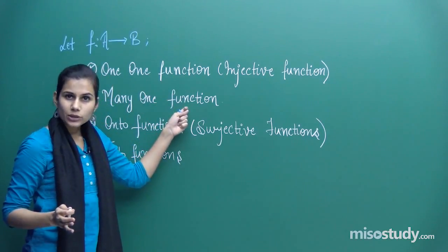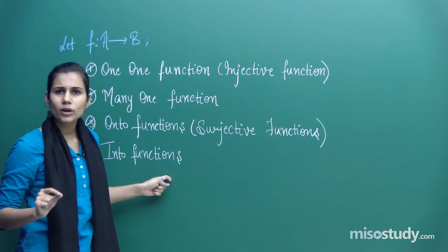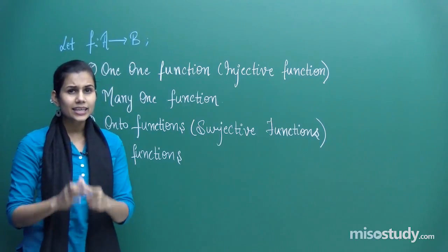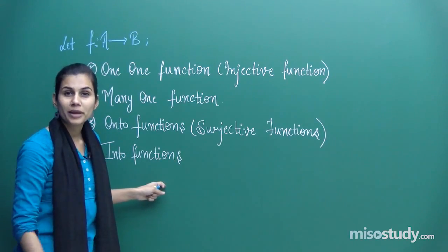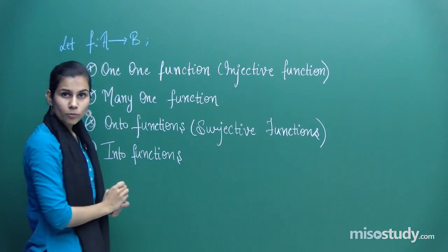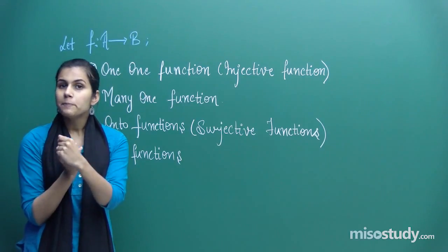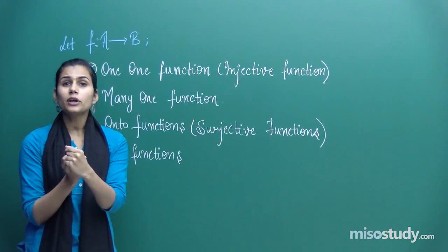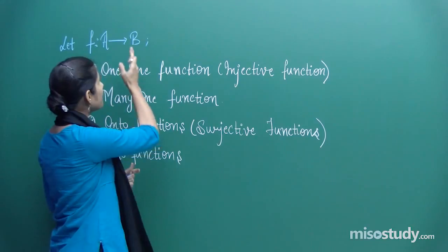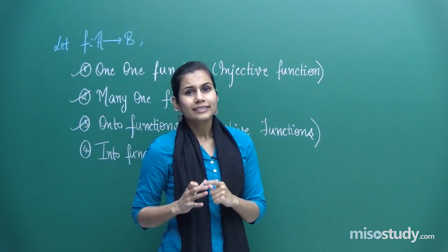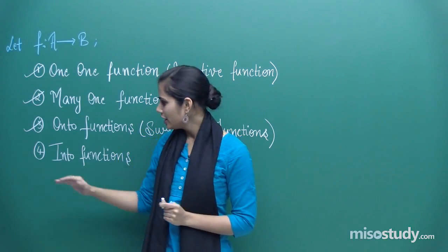Out of one-one and many-one, each function possesses exactly one quality. Out of onto and into, again each function possesses exactly one quality. The first and second quality are dependent on the behavior of the domain members, and the third and fourth quality are dependent on the behavior of the co-domain members. Every function will have two qualities attached to it — one from the domain side and one from the co-domain side. Let's now discuss in detail the fourth classification: into functions.